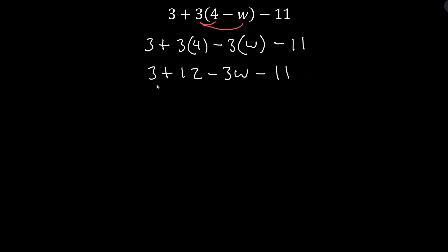And so now again, instead of rearranging this, we can just look at all the constant terms: 3 plus 12 minus 11. And we can combine those and we can notice that we just have a single w term minus 3w. So we're definitely going to be left with a minus 3w in the simplest form of this expression. And our constant term is going to be 3 plus 12 minus 11, which is 15 minus 11, that is 4. And this is as simple as this expression will get.